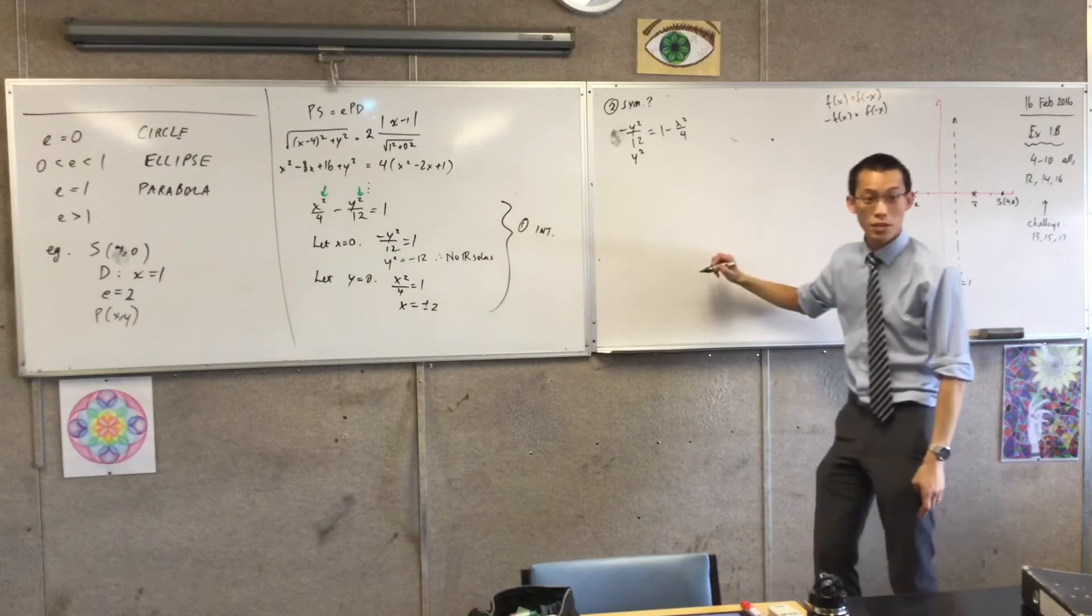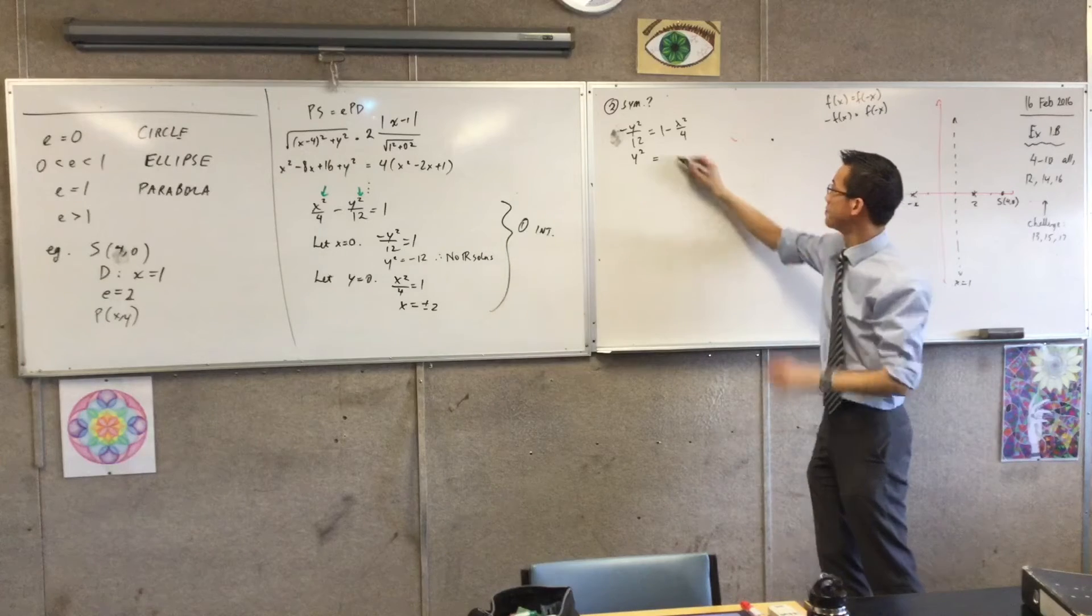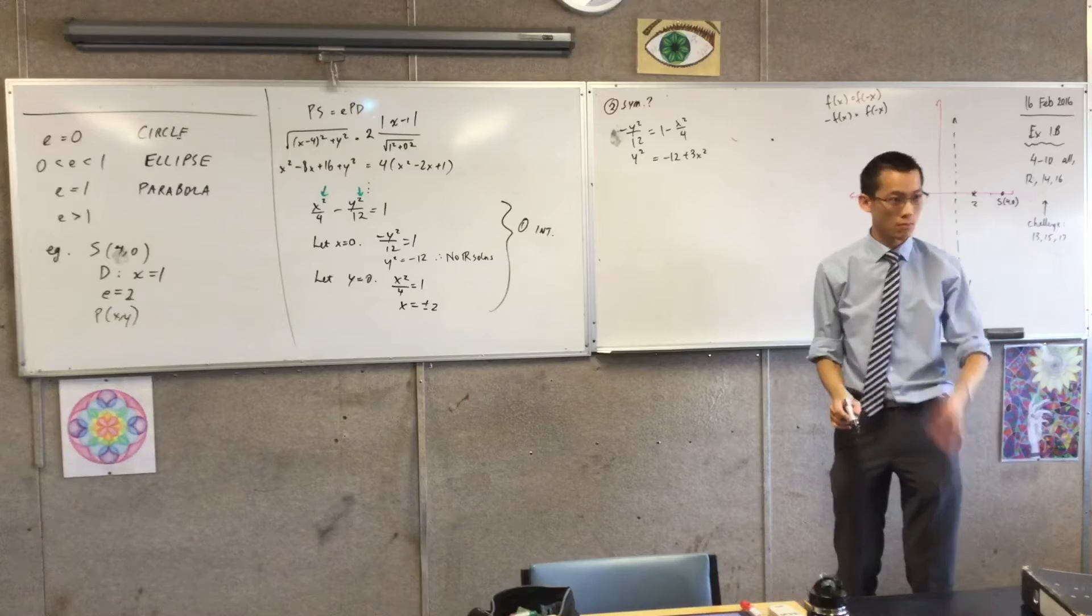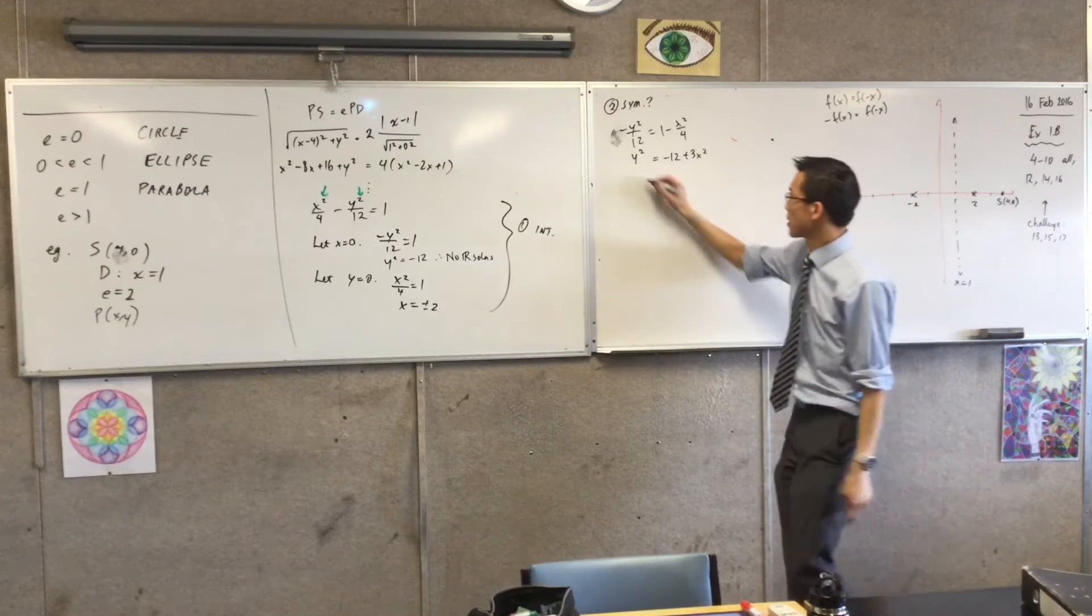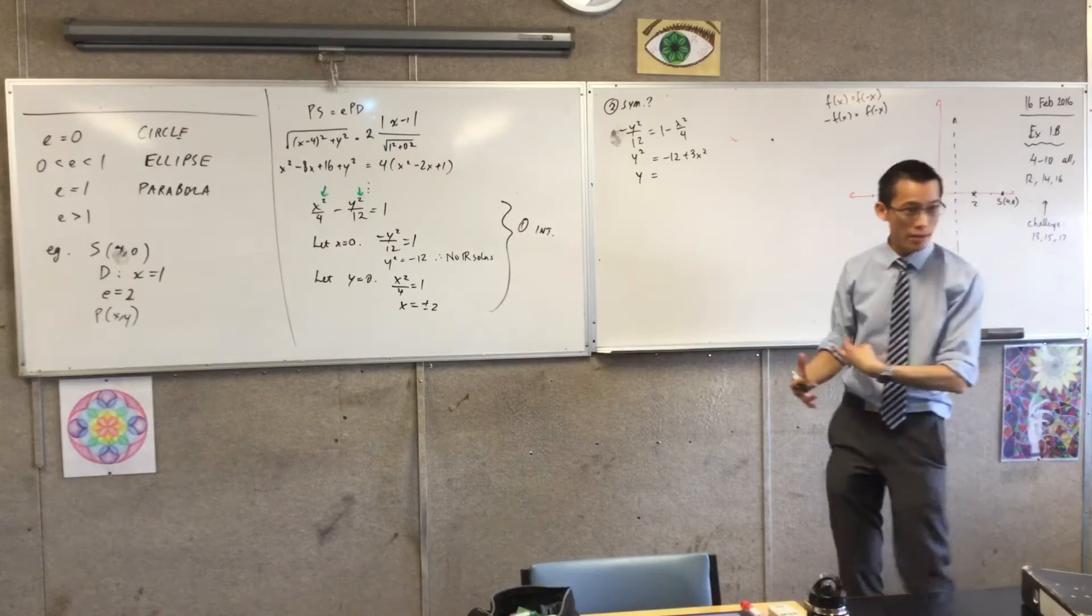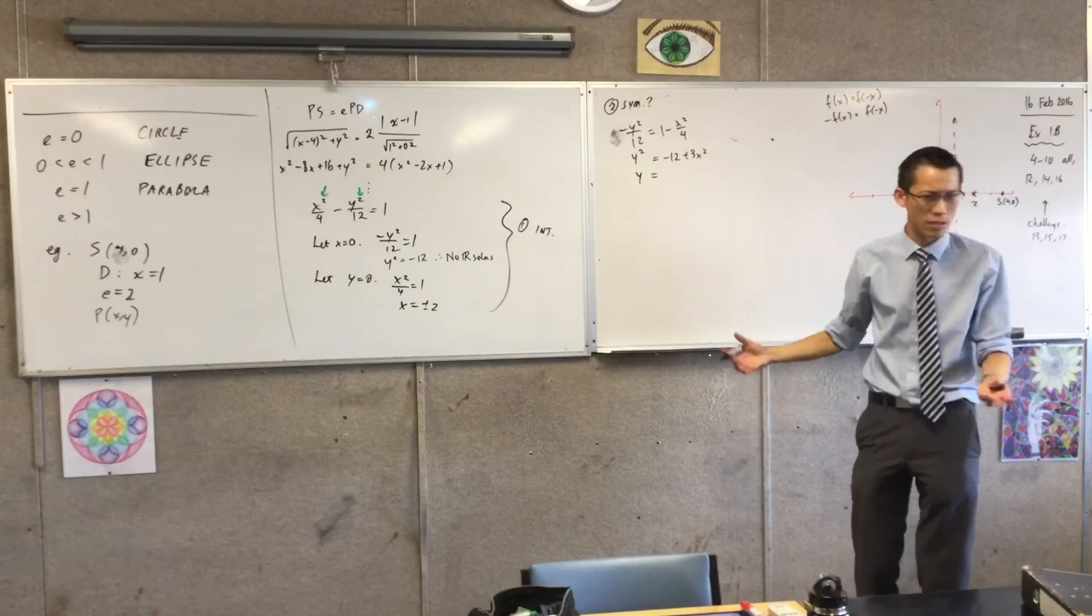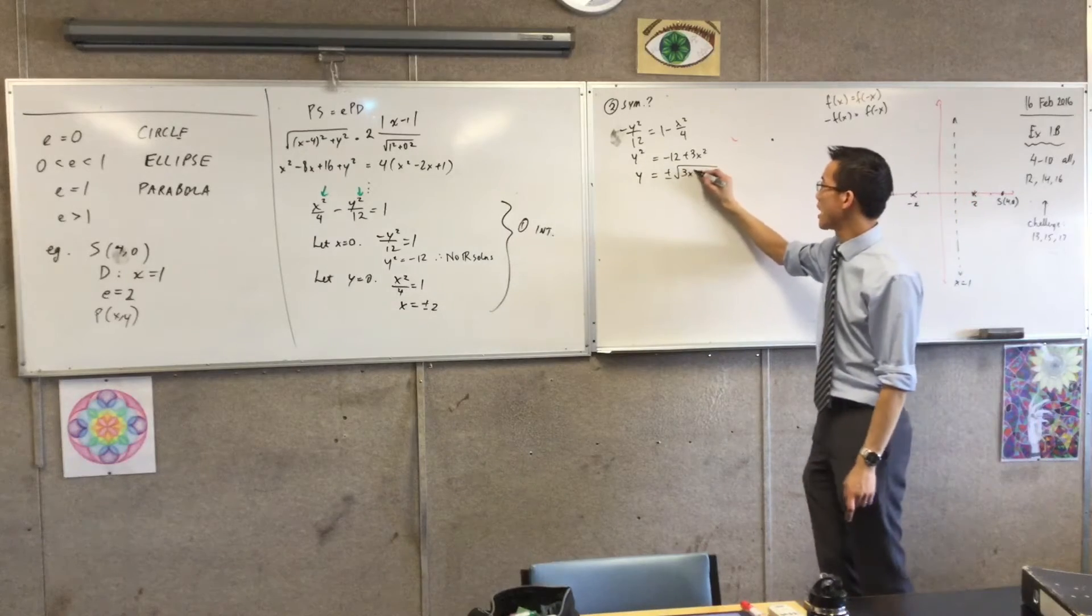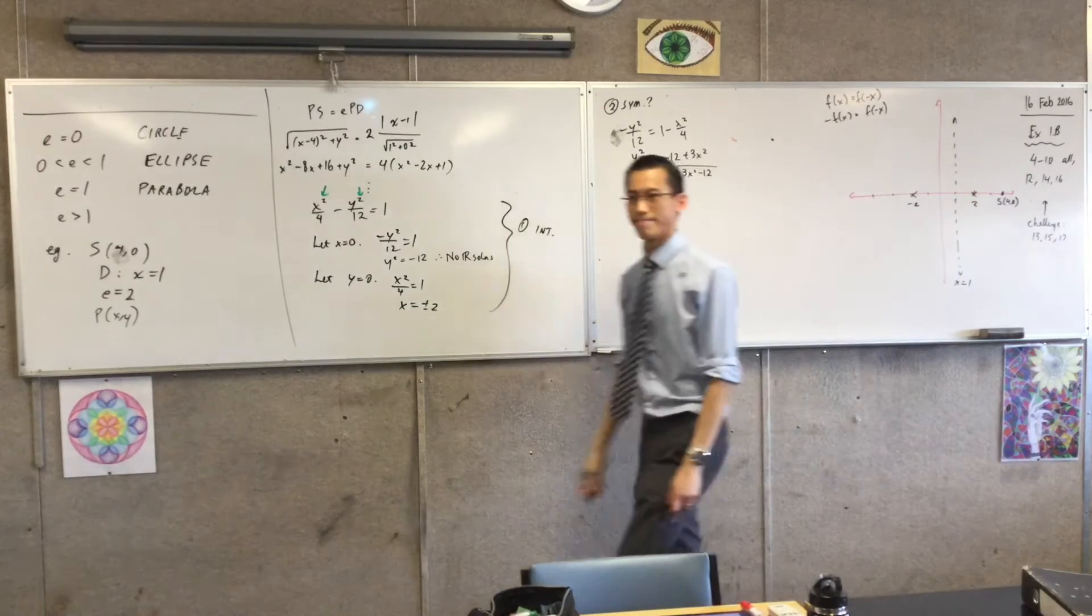That'll make y squared the subject. So that's going to give me negative 12 plus 3x squared. Are you happy with that? One more step. I'll kind of do two things at once. I'll take the square root of both sides, but I'm going to get a plus or minus because there are two solutions out there. While I'm at it, I might as well change the order of this so it looks a little more friendly. That's what I've got.